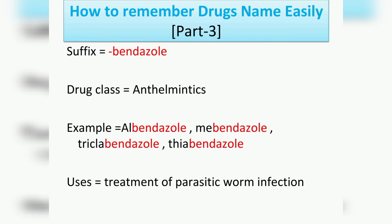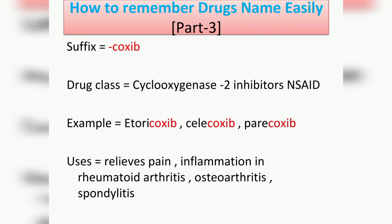The next suffix is '-bendazole', which belongs to the drug class anthelmintics. Examples include albendazole, mebendazole, triclabendazole, and thiabendazole. Their usage is the treatment of parasitic worm infections.